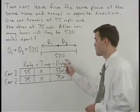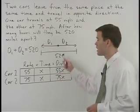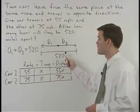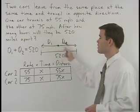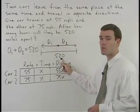So these two values represent the distances for the two cars. And remember from our picture that the distance for the two cars will add to 520.